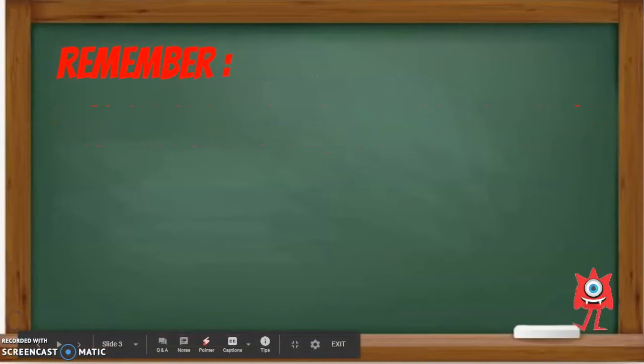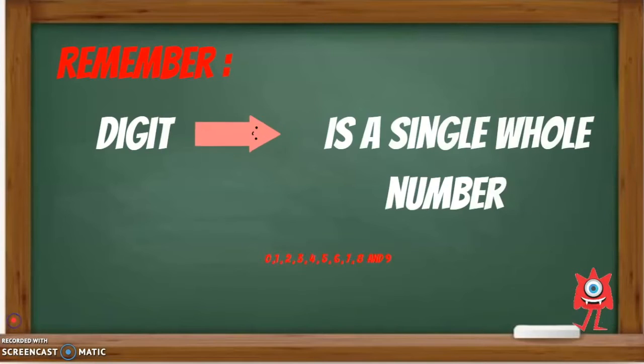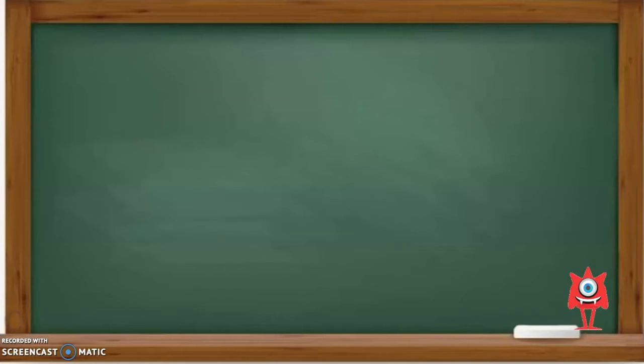Remember, a digit is a single whole number. The digits are 0, 1, 2, 3, 4, 5, 6, 7, 8, and 9.